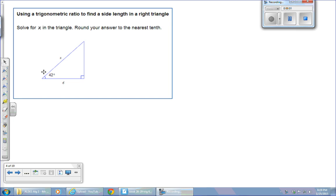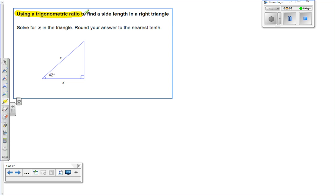Okay, so the next topic we're going to work on is using trigonometric ratios to find the side length in a right triangle. You're solving for x in the triangle, round your answer to the nearest tenth.